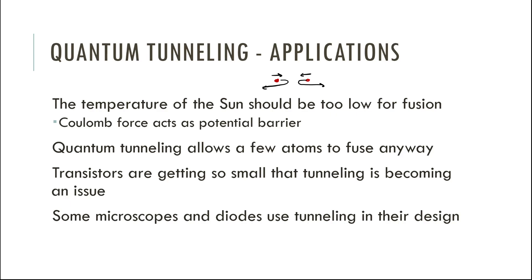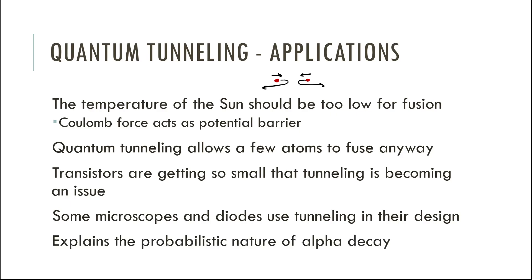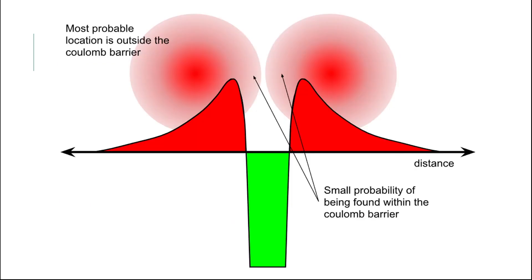There are some microscopes and diodes that use quantum tunneling to take measurements. Quantum tunneling also explains how alpha decay happens and why alpha decay is probability-based — why you can never predict when a nucleus will decay. Quantum tunneling is the reason, because it's all wave function stuff.